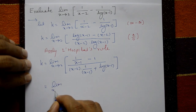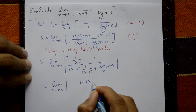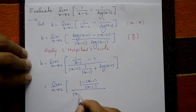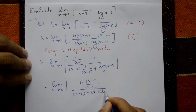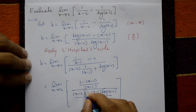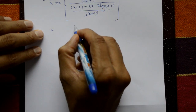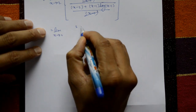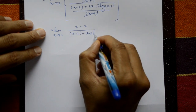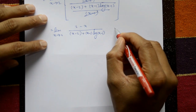After differentiation, the numerator becomes [1 - (x-1)]/(x-1) = (2-x)/(x-1). The denominator is (x-2)/(x-1) plus log(x-1). Cancelling (x-1) factors, we get k = limit x tends to 2 of (2-x) divided by (x-2 + (x-1)·log(x-1)). Taking x = 2 again gives 0/0 form.